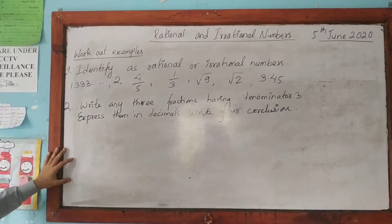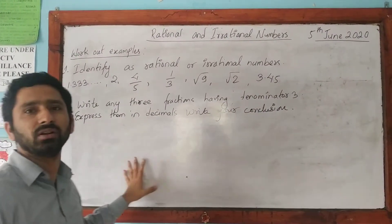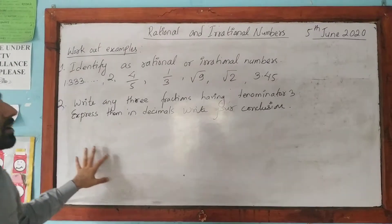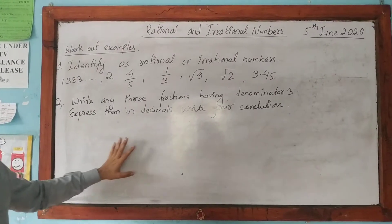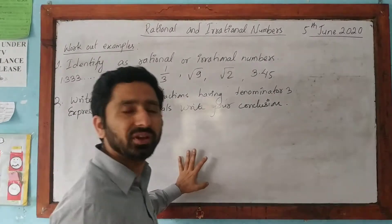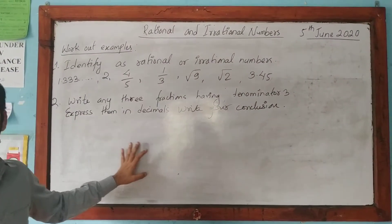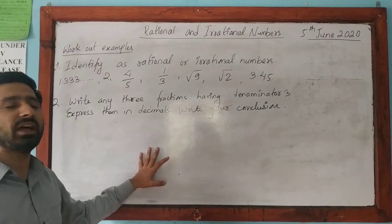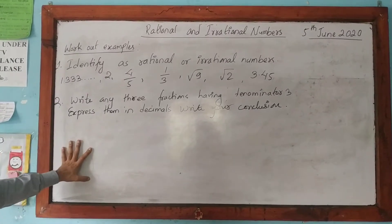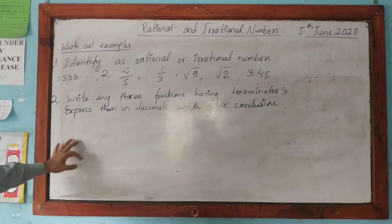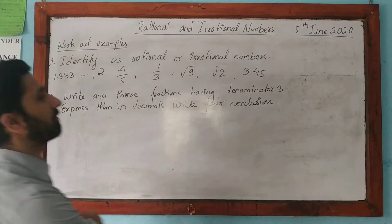In the previous video I started a topic rational and irrational numbers. There we studied the concept about rational and irrational numbers. What are rational numbers? What are irrational numbers? Along with the decimals - the decimals that terminate, the decimals that do not terminate but reoccur, and the decimals that are non-recurring and non-terminating.